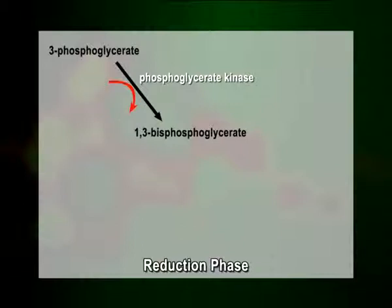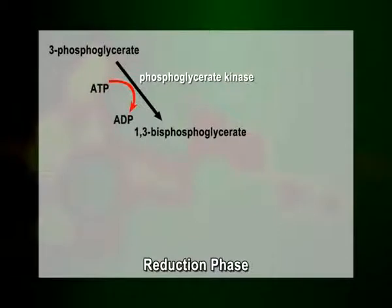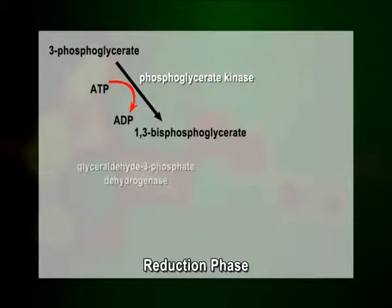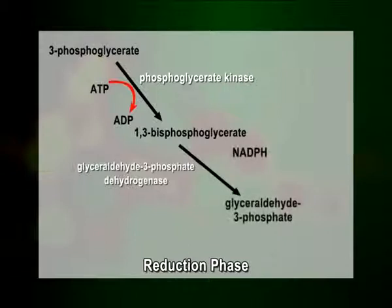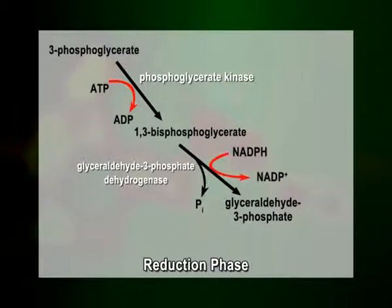It is to be noted that two molecules of 3-PGA are produced for every carbon dioxide that enters the cycle, so this step utilizes two ATP molecules per molecule of carbon dioxide fixed. Then another enzyme, glyceraldehyde 3-phosphate dehydrogenase, catalyzes the reduction of 1,3-BPG by NADPH — another product of the light reaction — to glyceraldehyde 3-phosphate (G3P) or 3-phosphoglyceraldehyde, and the NADPH is oxidized to NADP+.